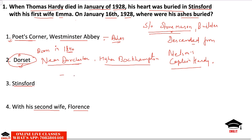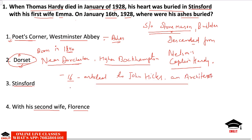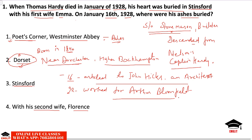In his early days, Hardy attended school in Dorchester. At the age of 16, he was articled to John Hicks, an architect. At the age of 22, he went to London and worked for architect Arthur Bloomfield. He thus started his career as an architect, then became a novelist, and lastly pursued his career in poetry.